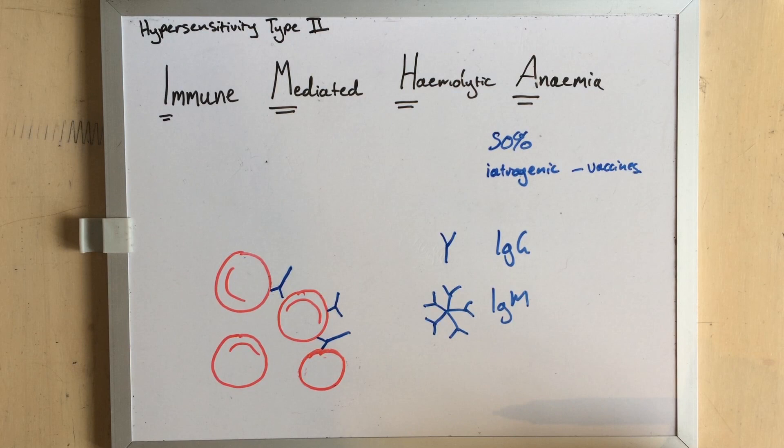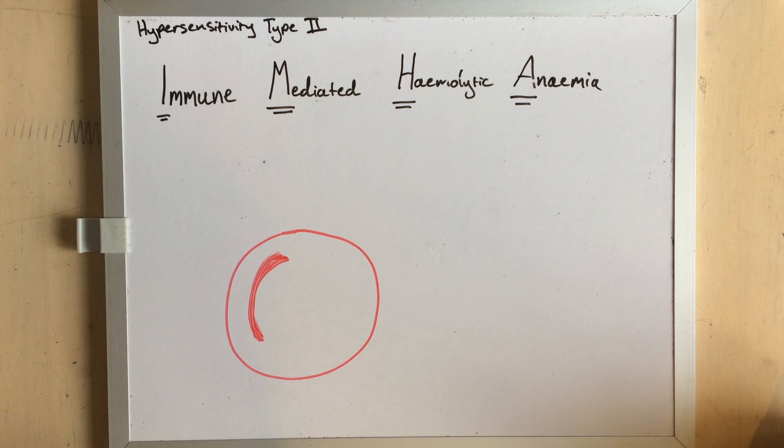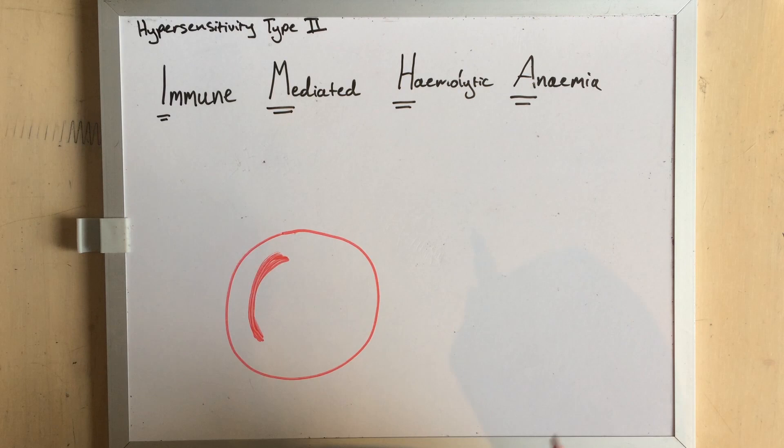But this is all a perfectly normal process, it's just affecting the wrong target. So the question I hope you're asking is how did the immune system get it so wrong? We talk about two main types of IMHA, though in clinical practice it doesn't always matter which one we're dealing with. We treat them basically the same way.